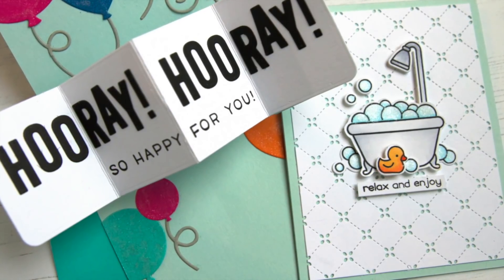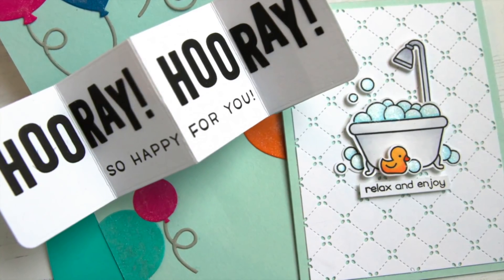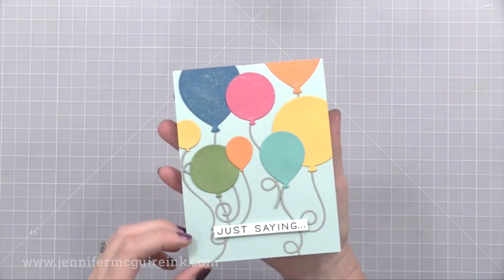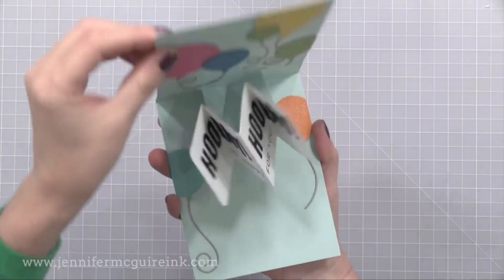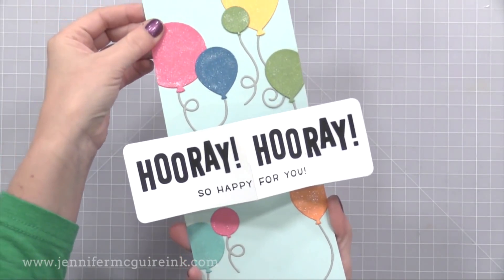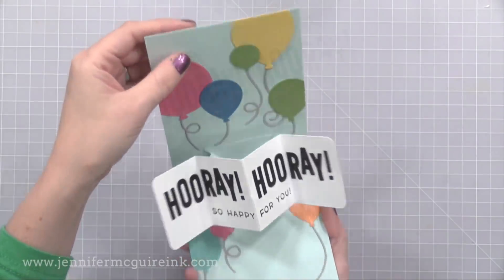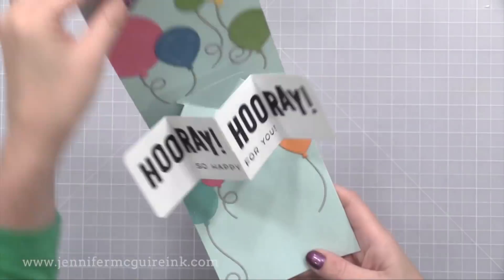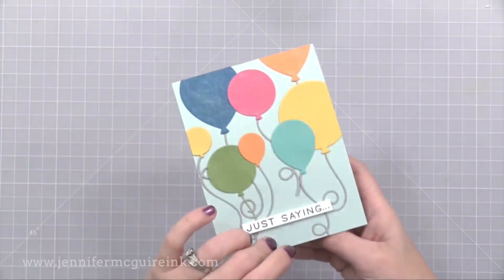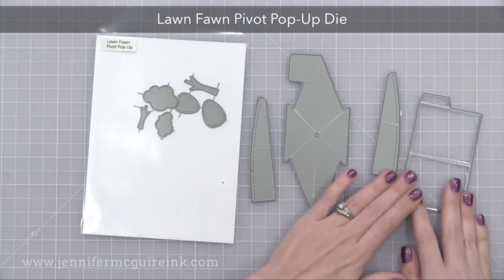First, I want to show you how to use the new Lawn Fawn pivot pop-up dies. Watch how this works. When you open up the card, this huge area pops up. It's a complete surprise because you can't tell when it is closed. This is so much fun to do and I thought I would show you how to create one and give you some ideas for some others.